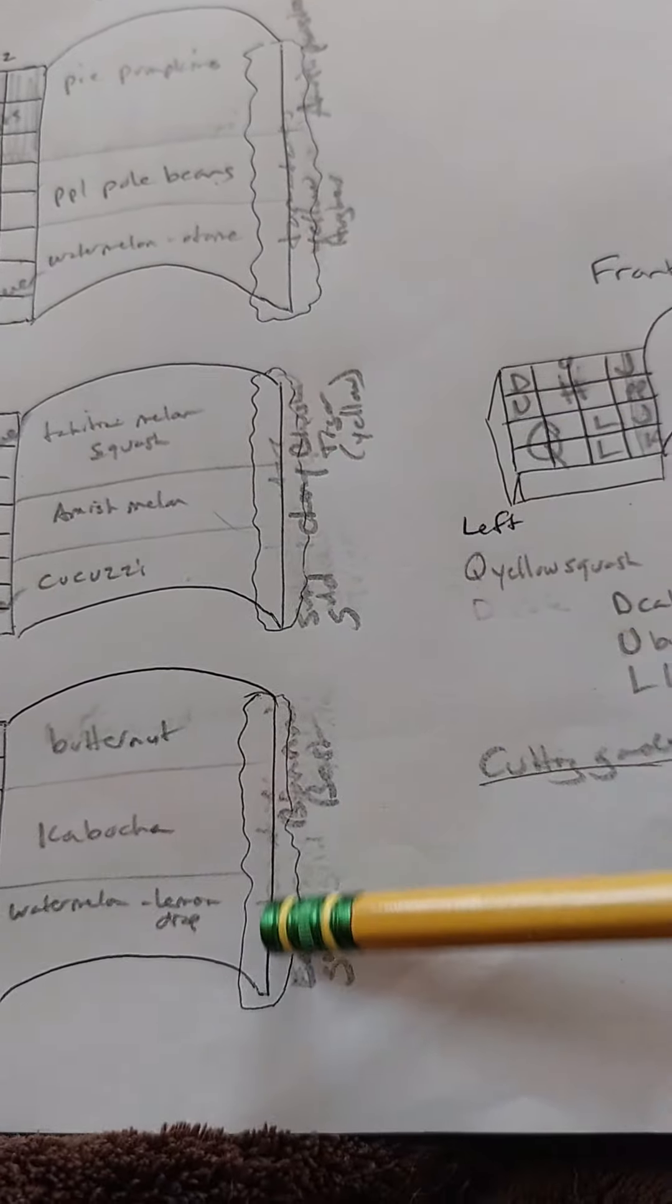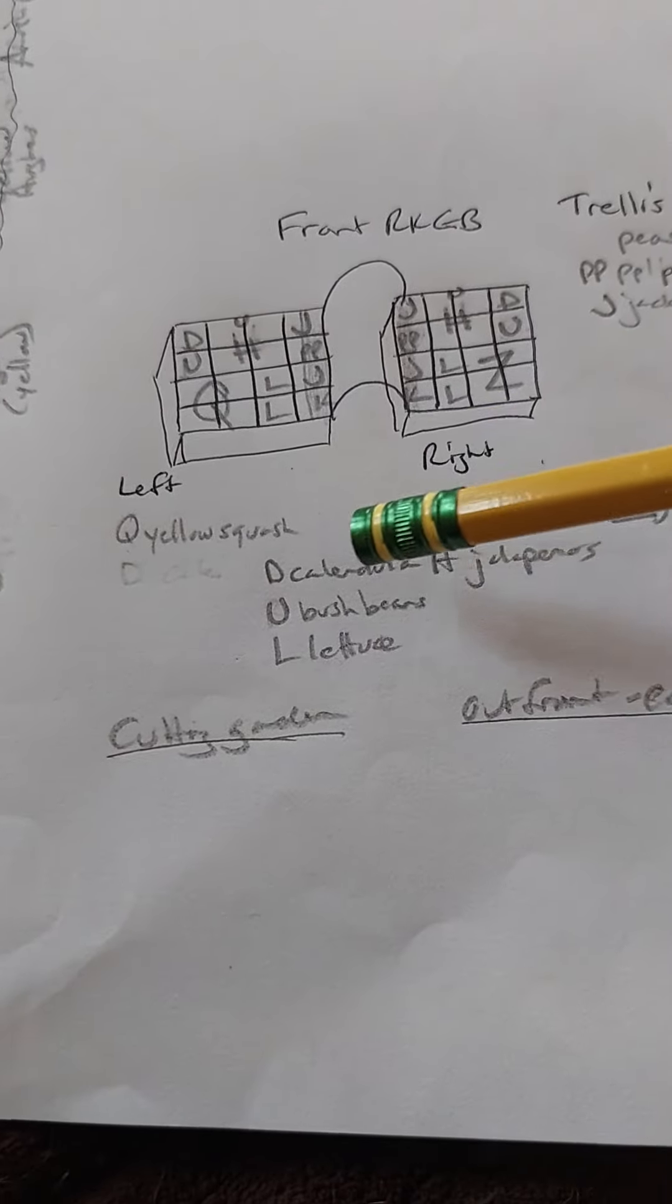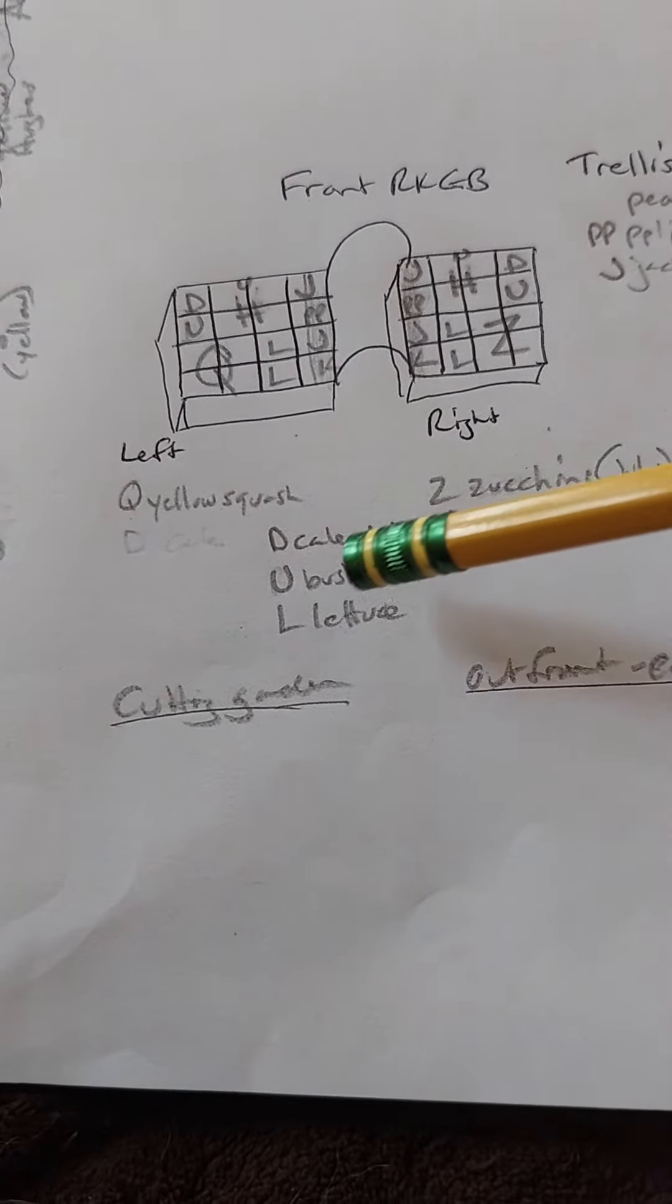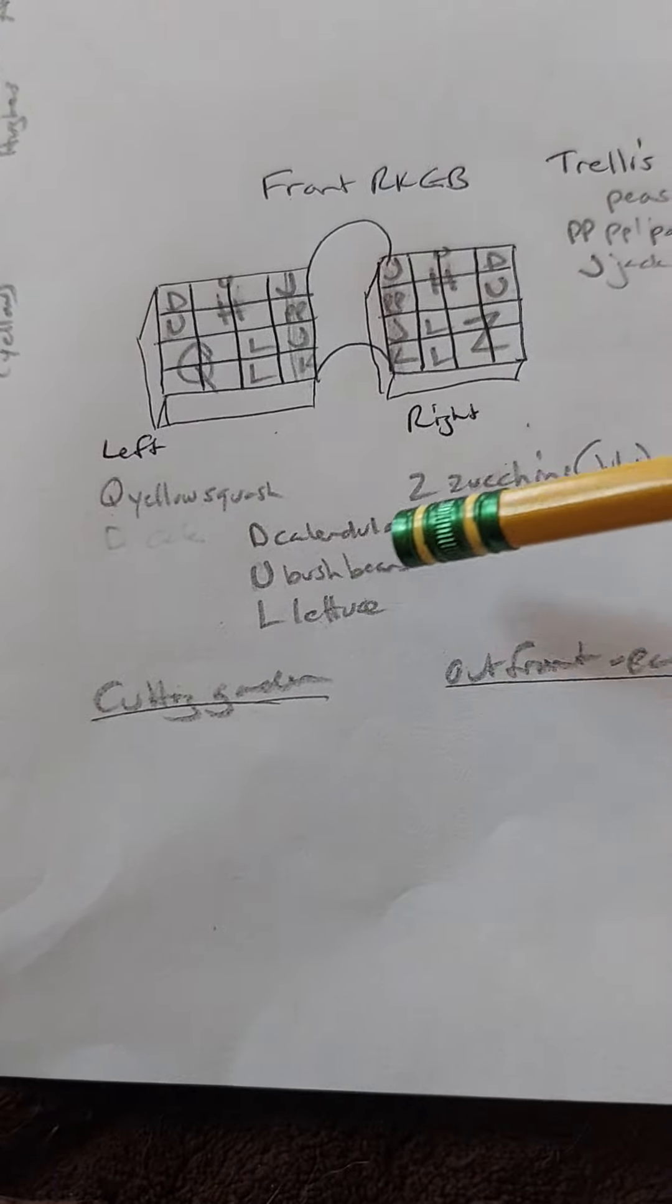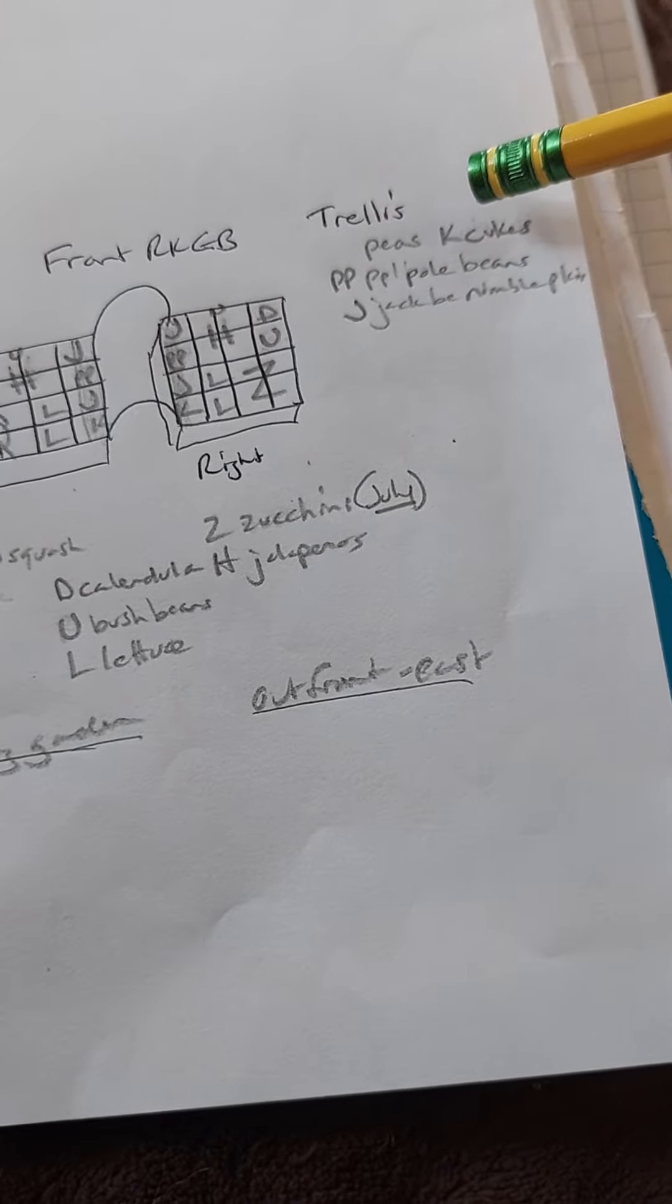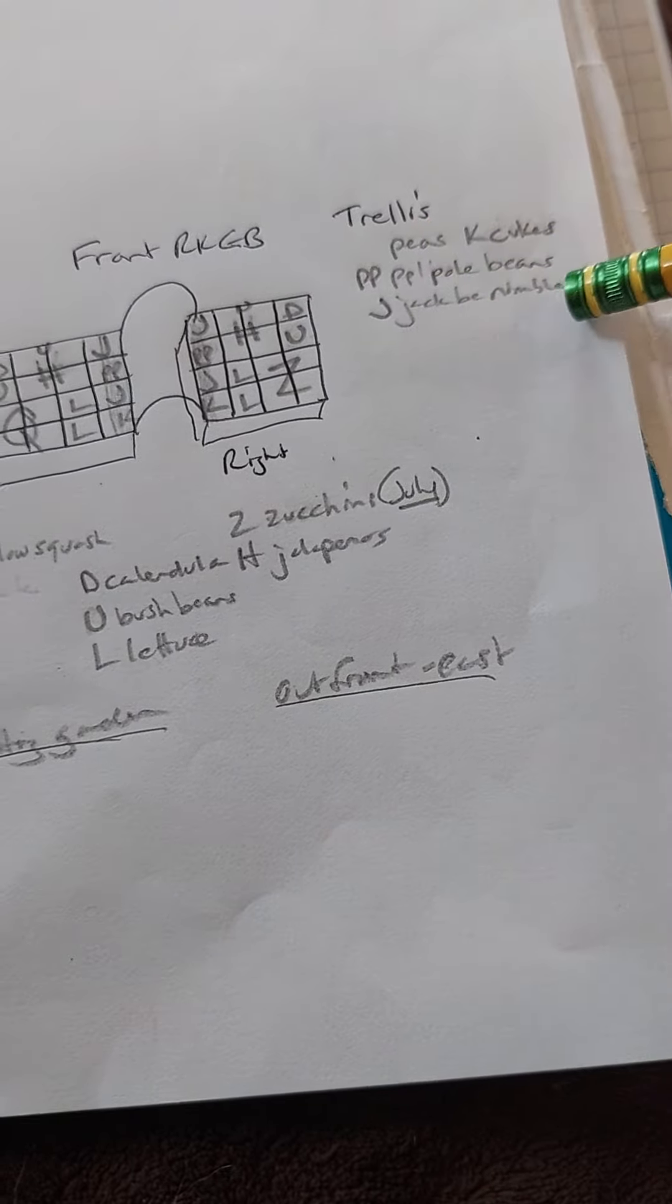In the front I've got yellow squash, zucchini, calendula, jalapenos, bush beans, lettuce. On the trellis will be peas and cucumbers, purple pole beans, and then the Jack Be Nimble pumpkins, which are the small ones that kids like.